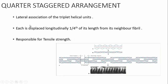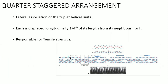There is an important and unique arrangement in collagen known as the quarter-stagger arrangement. It is the lateral association of the triplet helical units. In each successive row, the collagen molecule starts offset by one-fourth of the distance from the previous row. This quarter-stagger arrangement is essential for the tensile strength of the collagen molecule.